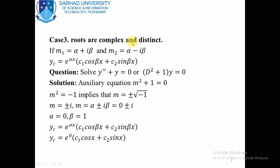When roots are complex and distinct, suppose m1 is the complex root alpha plus iota beta, and m2 is also a complex root alpha minus iota beta. These two complex roots are different. So the complementary solution for the higher order homogeneous differential equation will be e^(alpha·x) into (c1·cos(beta·x) + c2·sin(beta·x)).